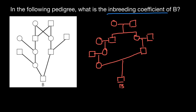Let me show you an example. Imagine that this person at locus A may have two alleles: allele A1 and allele A2. And this person may also have two alleles at locus A: A3 and A4. In order to get two identical alleles from any of these ancestors, the pathway has to be as follows. For example, allele A1 can be inherited like this, and the probability would be one half, one half, one half, one half, and one half.